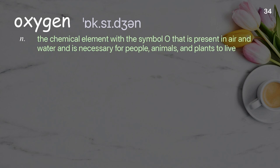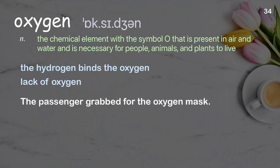Oxygen. The chemical element with the symbol O that is present in air and water and is necessary for people, animals, and plants to live. Examples: the hydrogen binds the oxygen, lack of oxygen. The passenger grabbed for the oxygen mask.